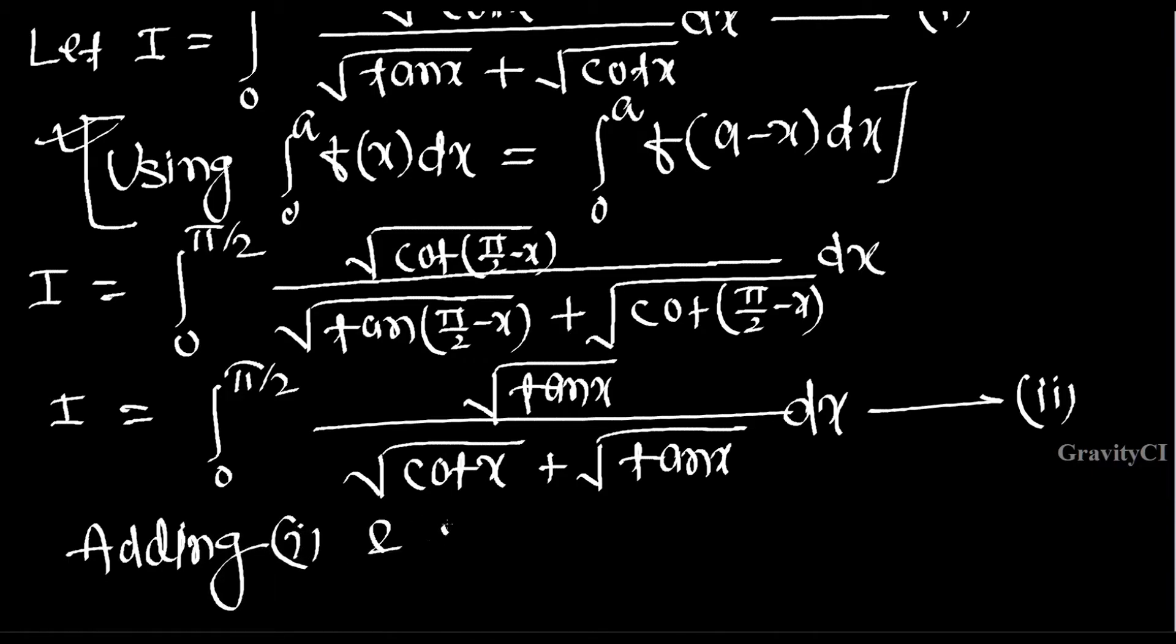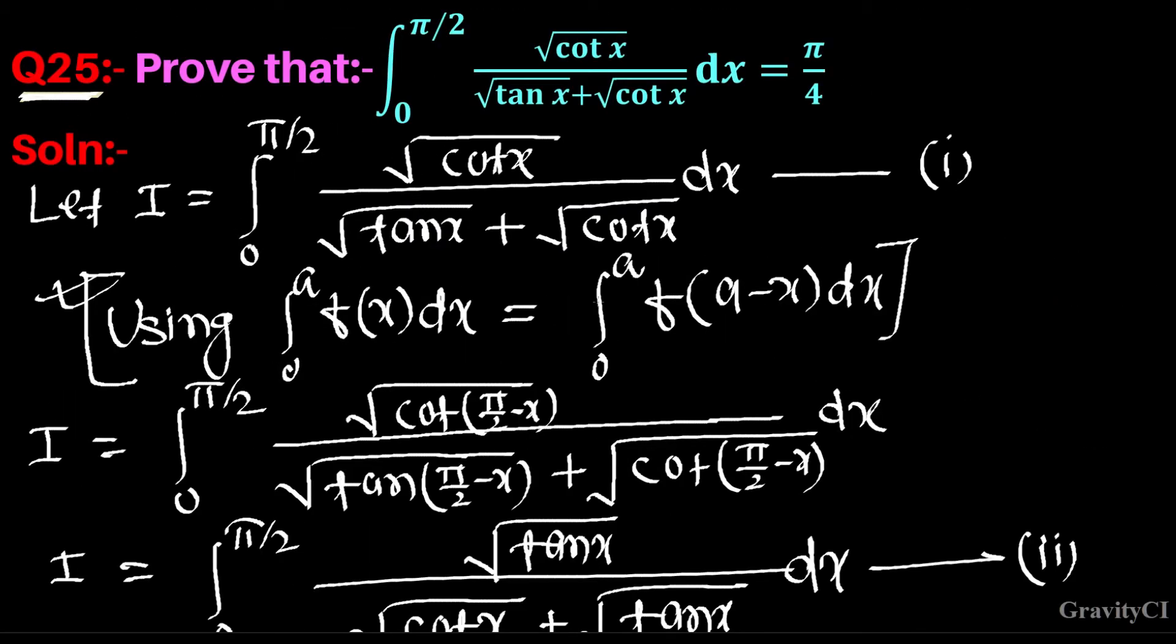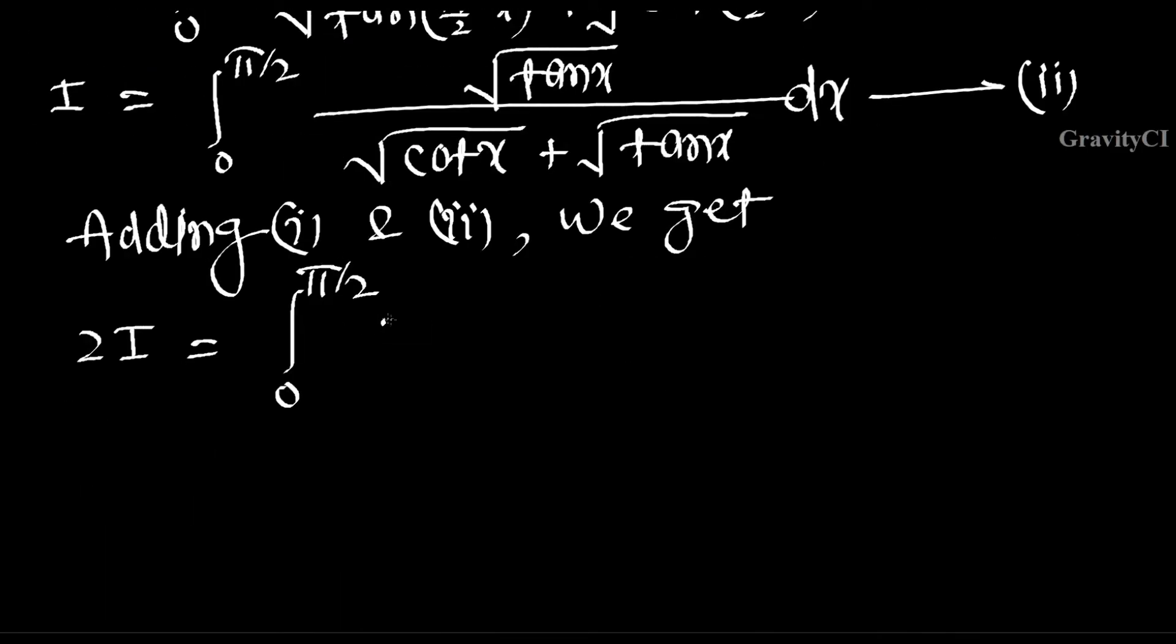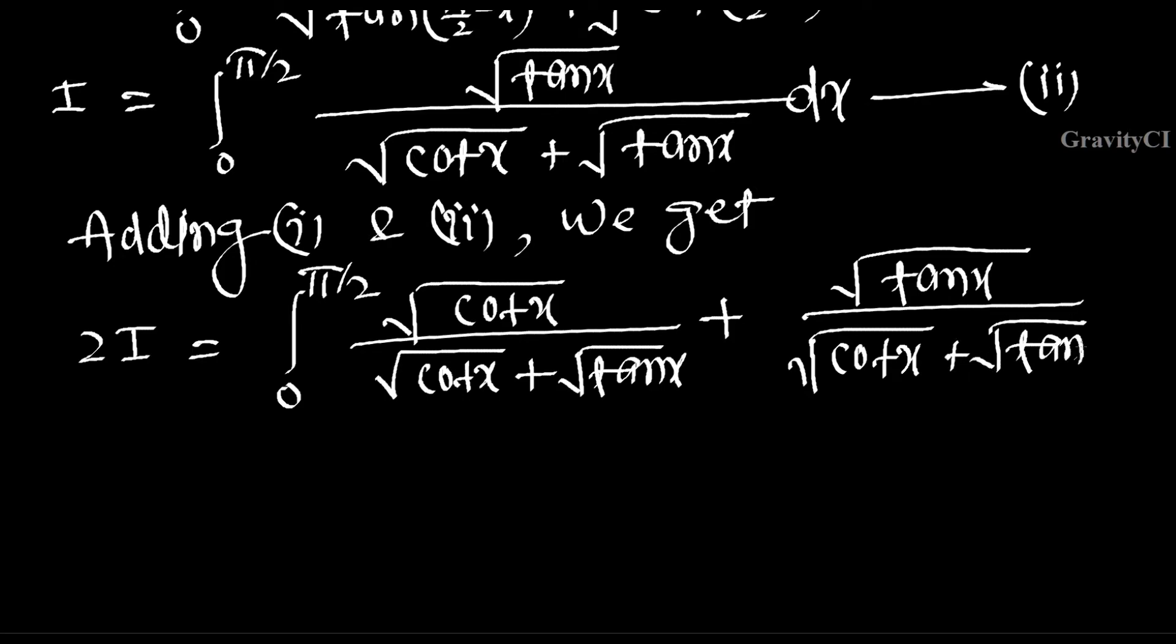Adding equations 1 and 2, we get 2I equals integral from 0 to pi/2, and then we add the equations: root cot x upon root cot x plus root tan x, plus root tan x by root cot x plus root tan x.